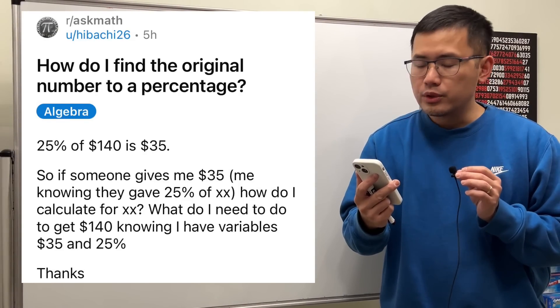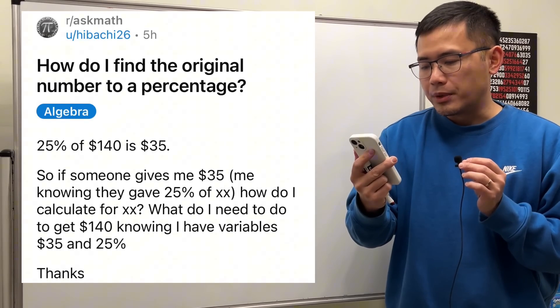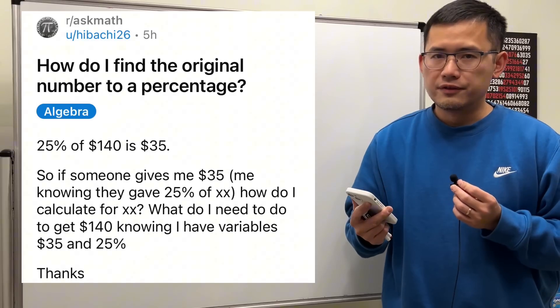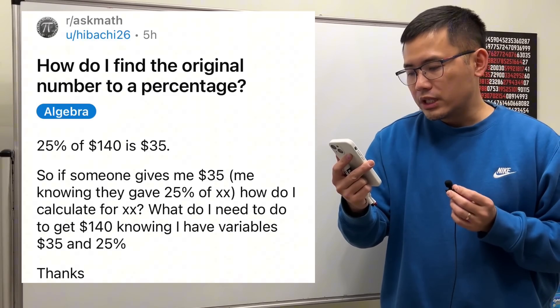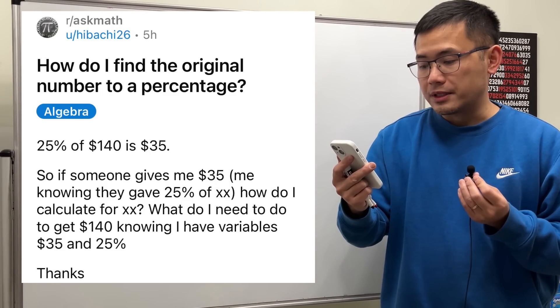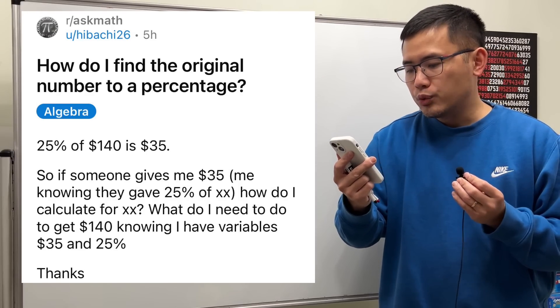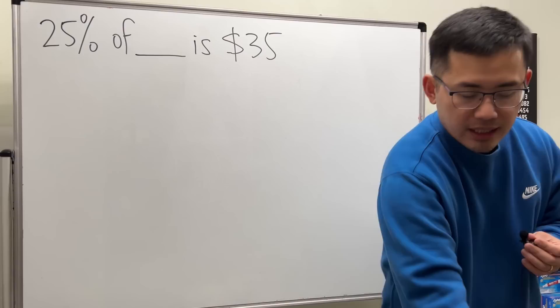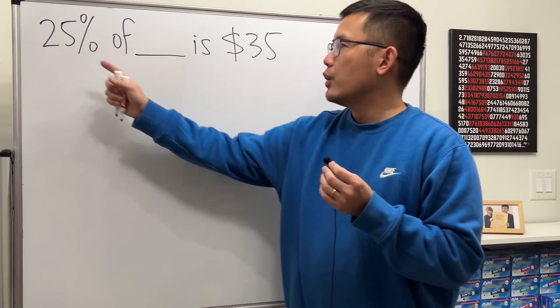How do I find the original number from a percentage? 25% of 140 is $35. So if someone gives me $35, knowing they gave 25% of x, how do I calculate for x?